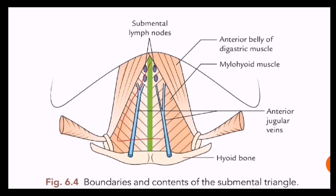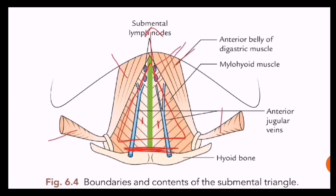Looking at the picture, the submental triangle is seen in between the two anterior bellies of the digastric muscles. The base is formed by the hyoid bone, the apex is the chin, the floor is the right and left mylohyoid muscles, and the contents are small submental lymph nodes.